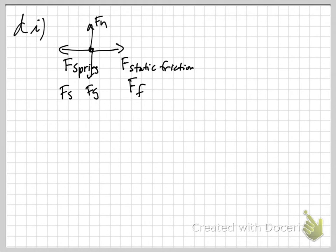So, one point for taking care of the y direction. That's Fn and Fg. One point total. One point for the spring force to the left. One point for friction to the right. That's three points total for that free body diagram.